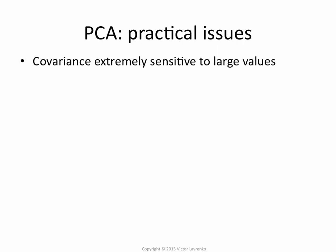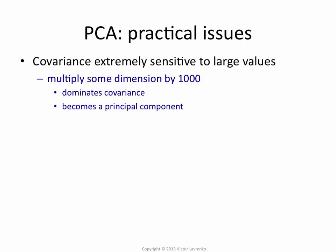PCA is based on the covariance matrix. Covariance is sensitive to individual large values. So one really simple way to mess up your PCA is to take a single attribute and multiply it by a big constant.